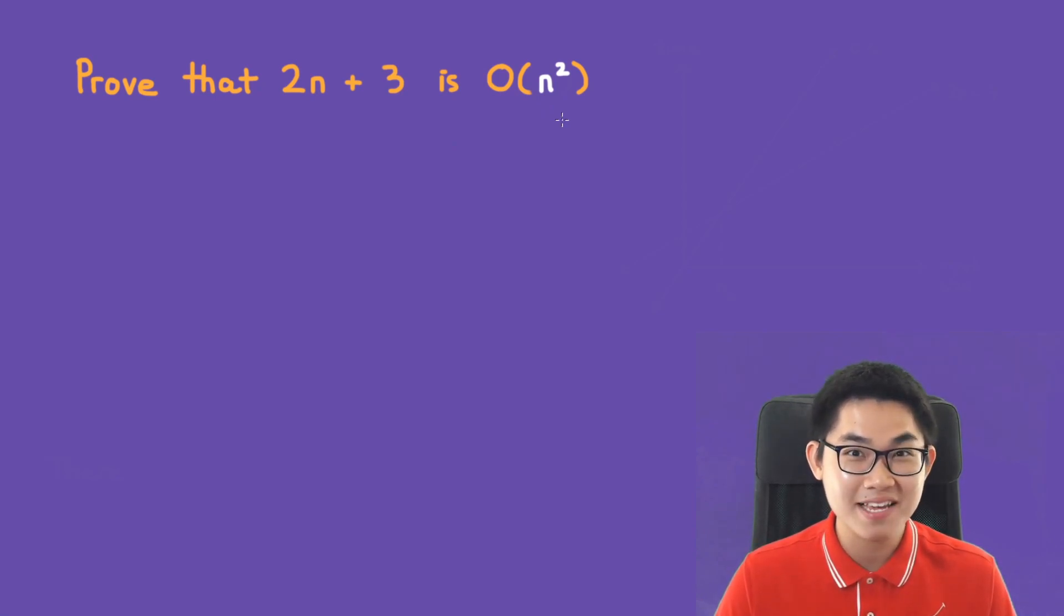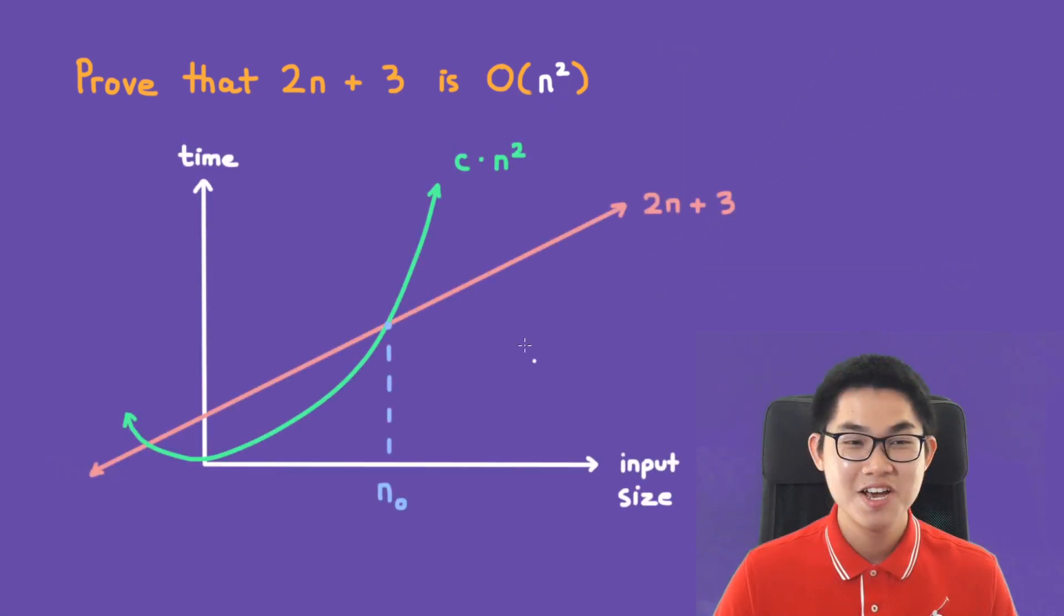The answer is yes, it can be, and let me show you why. To show that this function is O(n²), we just find a function c times n² that grows faster than our red function starting from n₀. And of course you can pick c to be 1 because a quadratic function always grows faster than a linear function, but we want to find c using the standard way.